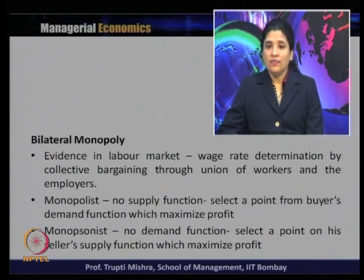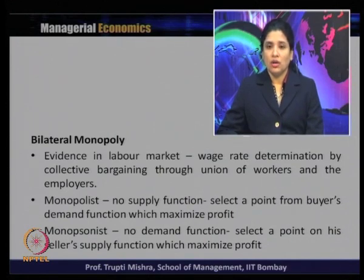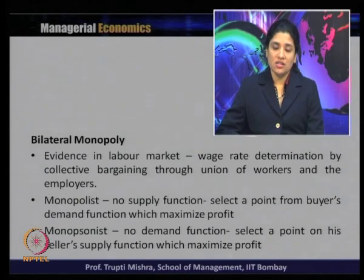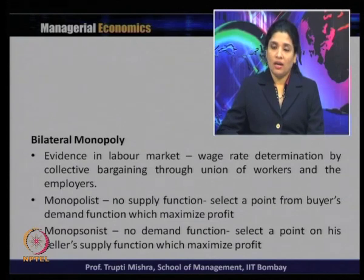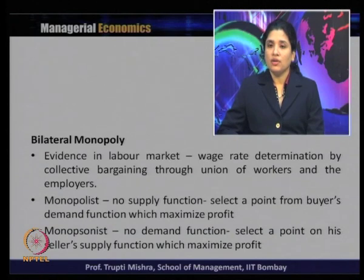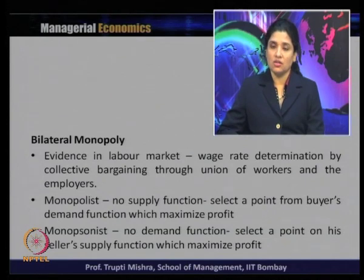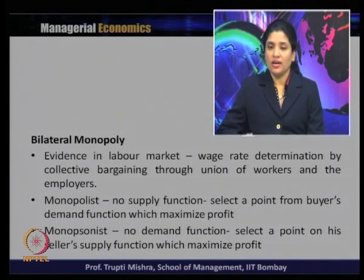Ideally, the monopolist depends on the monopsonist to maximize profit, and the monopsonist depends on the monopolist to maximize their profit. As you know, the monopolist has no supply curve — there is an absence of a supply curve in monopoly. There is no supply function, and generally the monopolist selects a point from the buyer's demand curve which maximizes the profit.